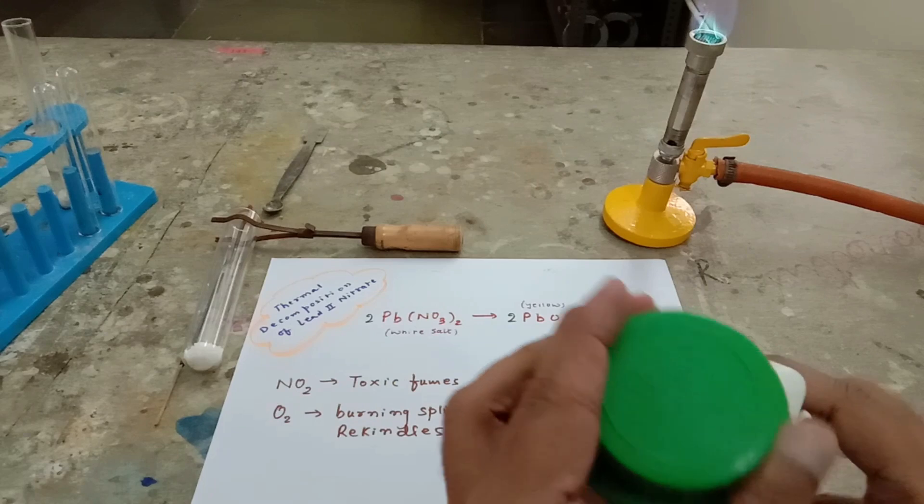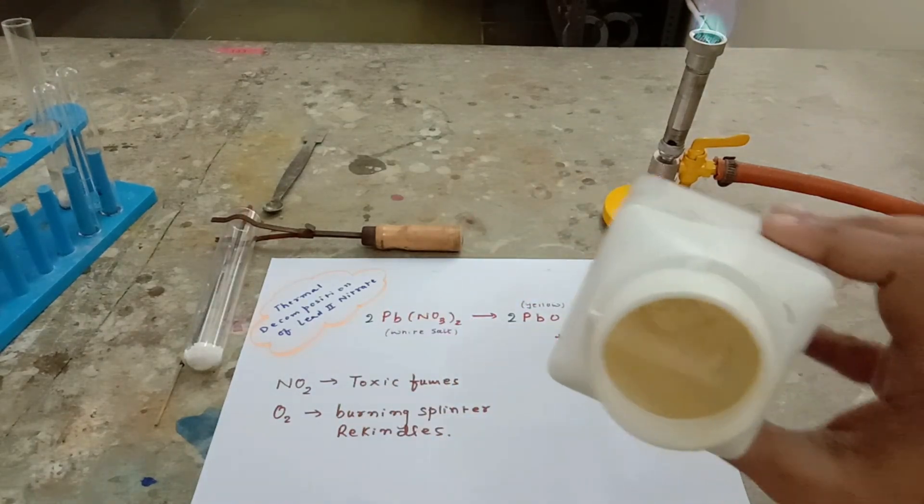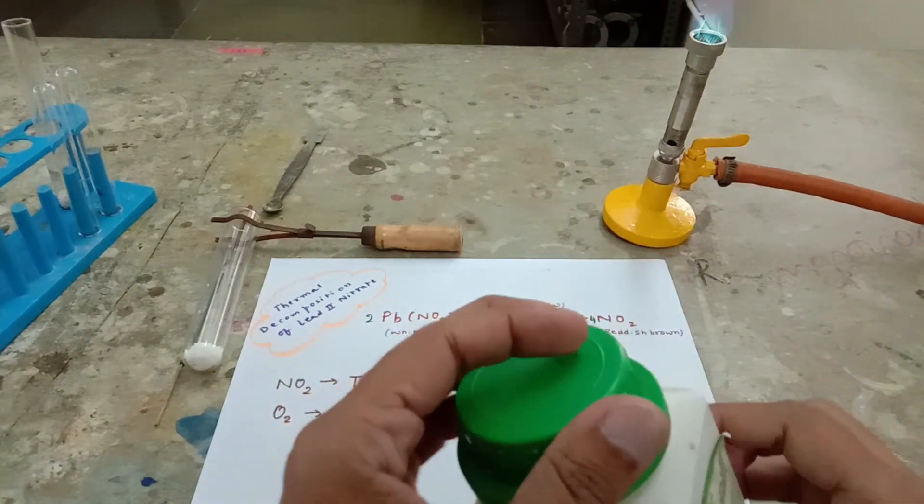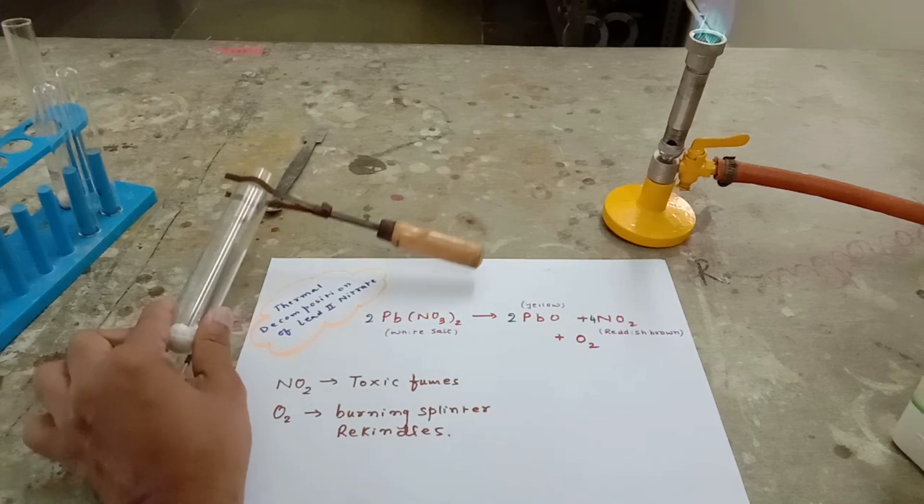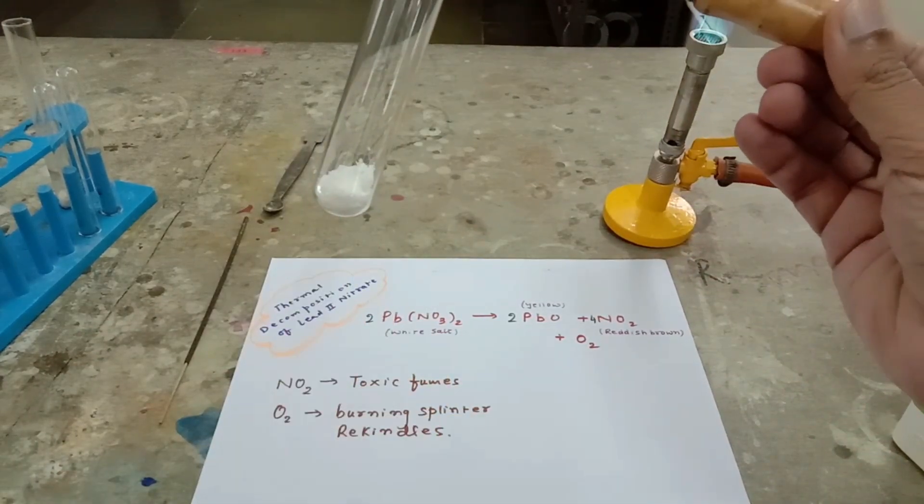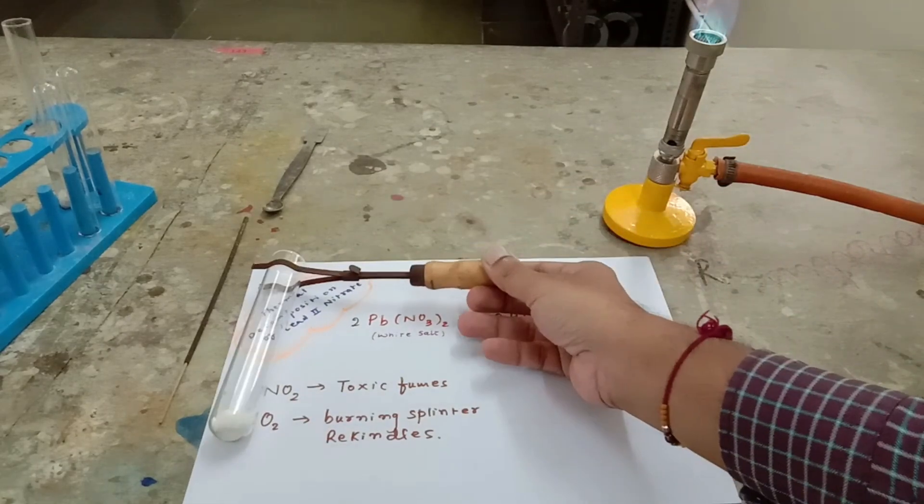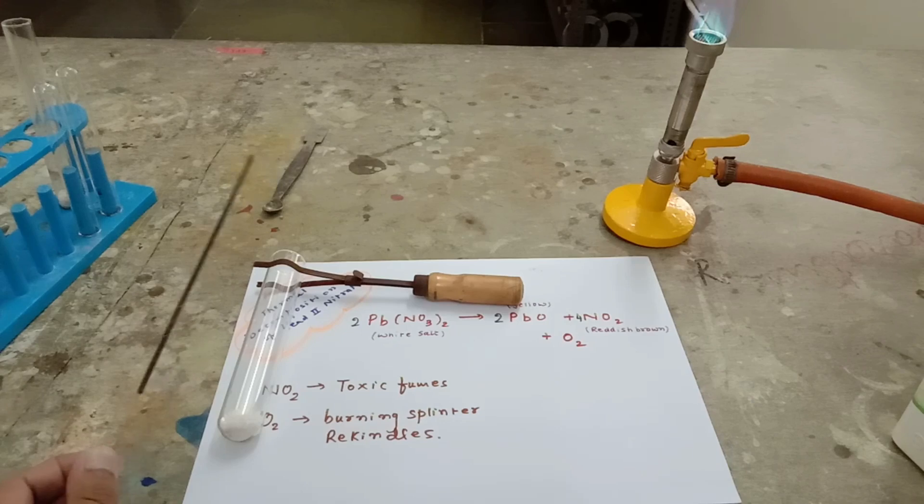We require Pb(NO3)2, lead nitrate, which is white in color. I have already taken some amount of lead nitrate in the test tube. I also have this Pb(NO3)2 over here, plus we also require an incense stick to check the presence of oxygen.